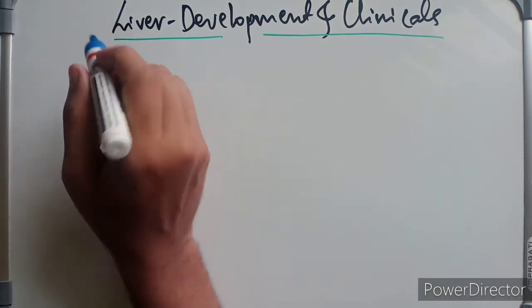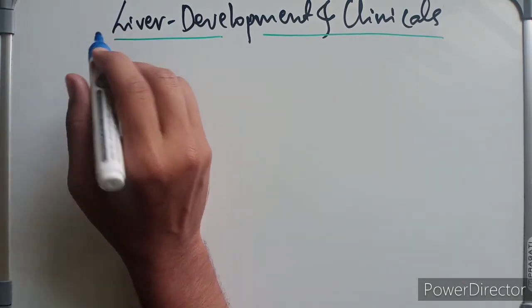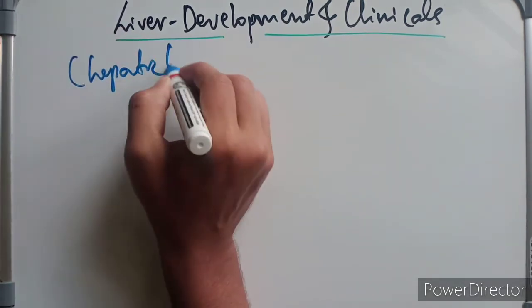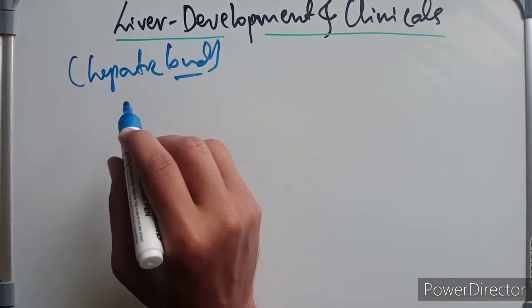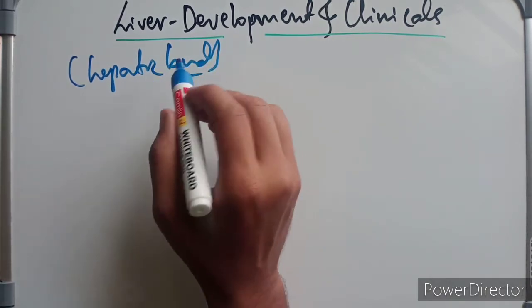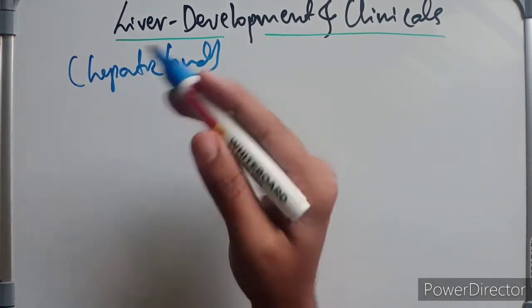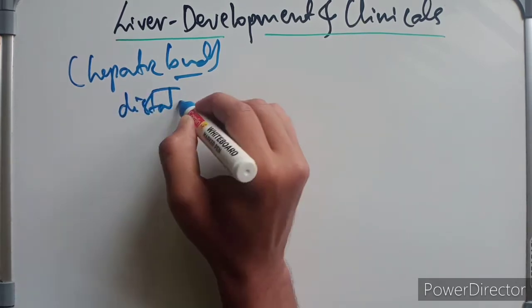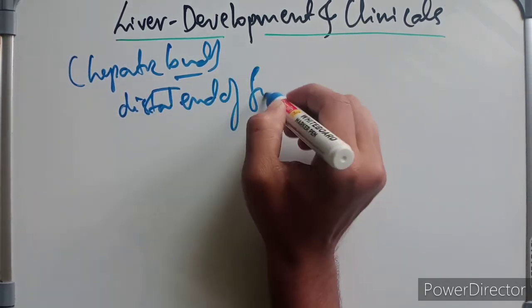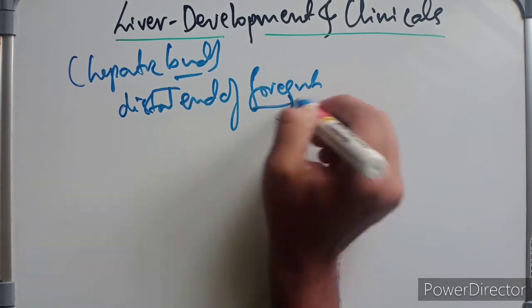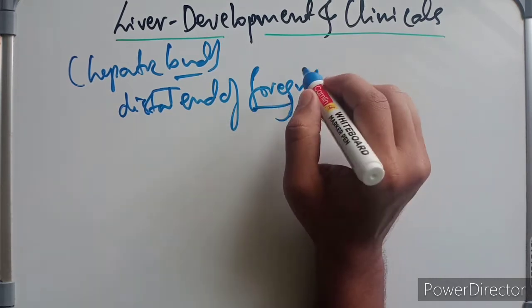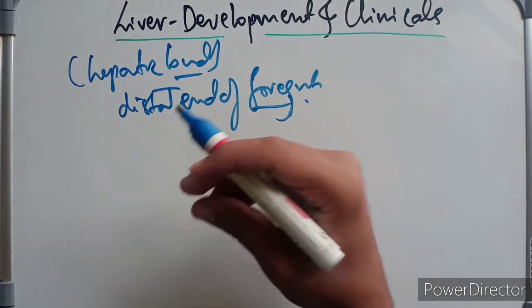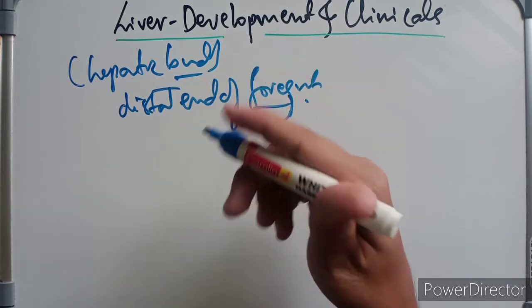The liver develops from a diverticulum called the hepatic bud. This hepatic bud emerges from the distal end of the foregut. It elongates cranially and gives rise to two small accessory buds.